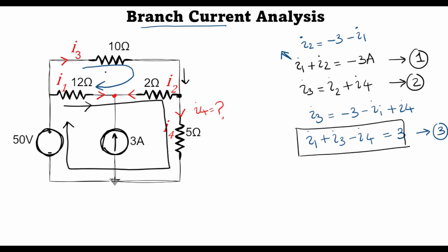Now let's write the KVL equations for the bigger upper mesh loop. I1 is entering with polarity positive-minus, I2 is entering with polarity positive here and negative here, I4 has its polarity, and I3 is positive-negative.